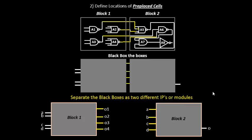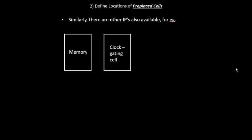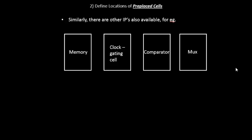The placement of these blocks in the design is what we refer to as pre-placed cells. Why the name 'pre-placed'? It's because before the actual placement and routing of the circuit by automated tools, the locations of these IPs are fixed — they are placed before your placement and routing happens. There are other IPs also available: for example, a memory, a clock gating cell, a comparator, a mux/demux, a clock divider — basically any logic which you feel will be used again and again can be built separately and reused multiple times.